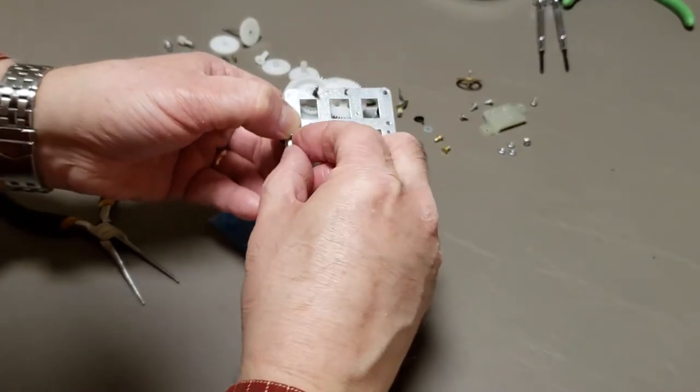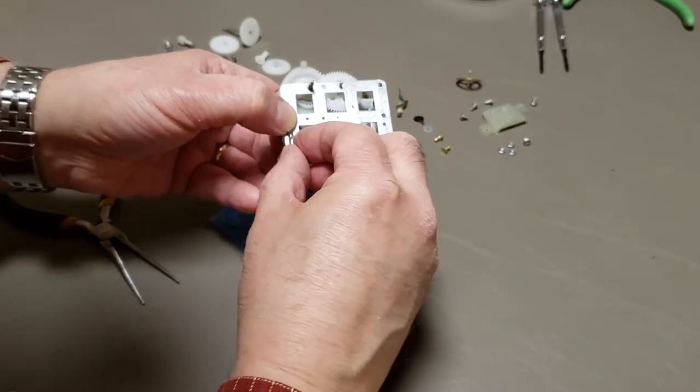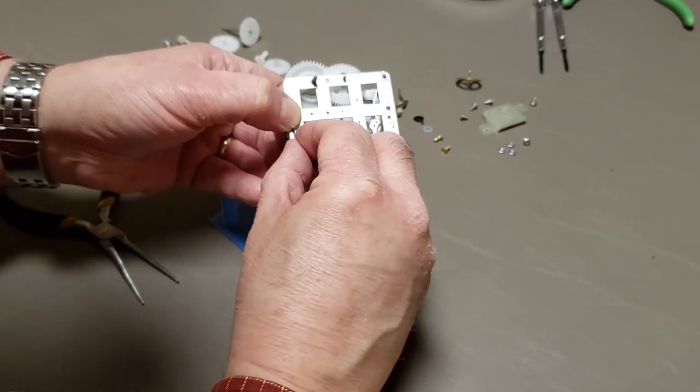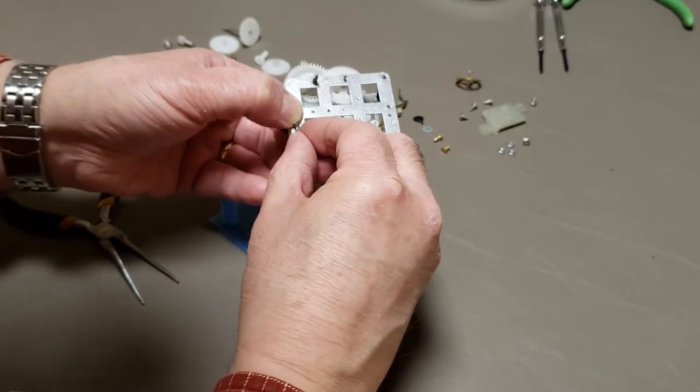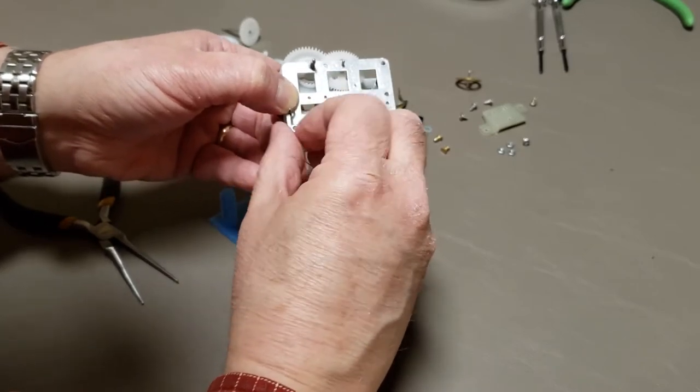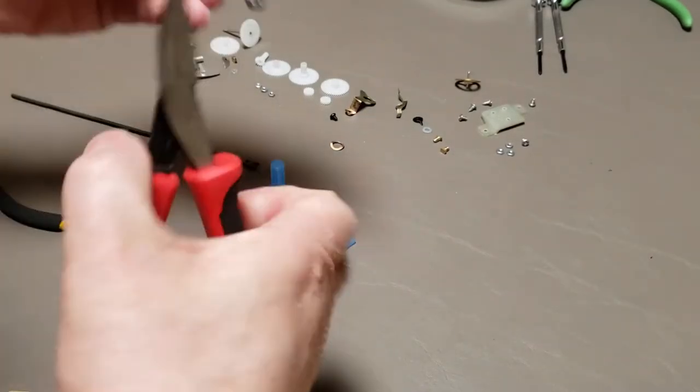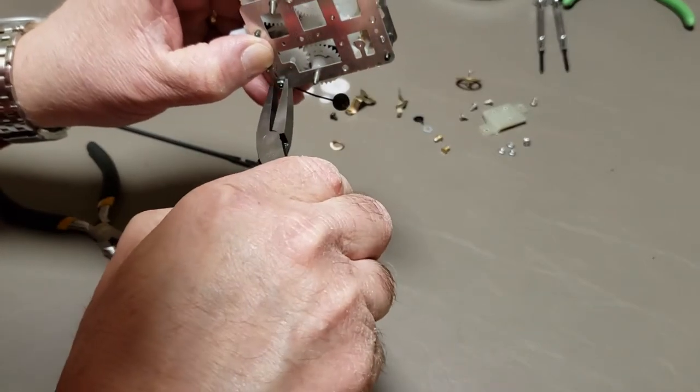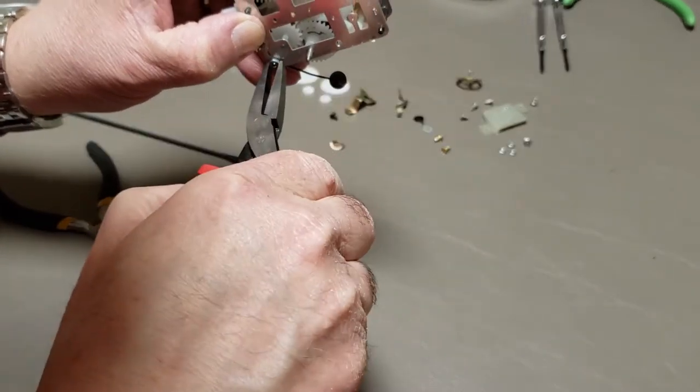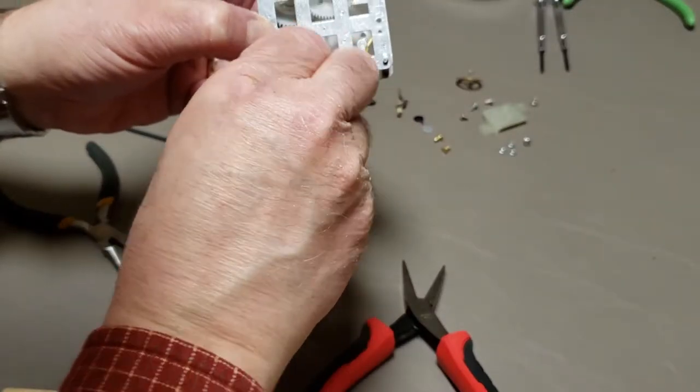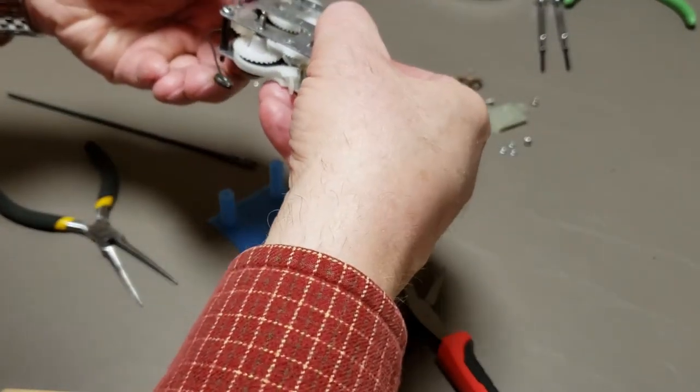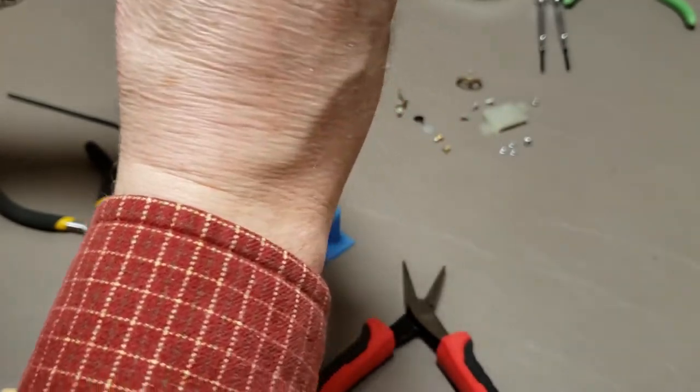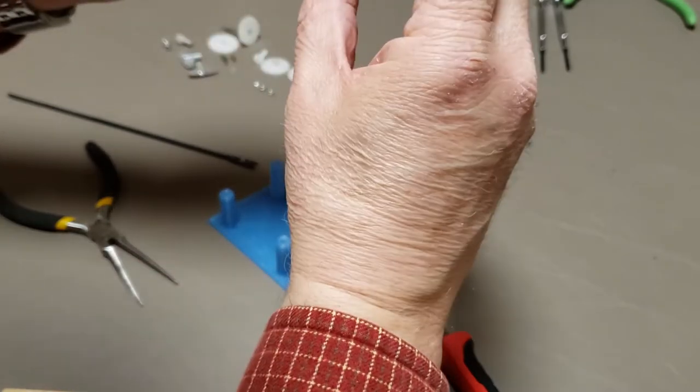So just like eight day clocks, I find it easiest to work from the mainspring ends, the great wheel ends. Now, I'm only using these pliers because I think this post is a little stripped. Now with that safely in, I can do the others. I can get the others in. So let's get over here. Put that main wheel back in.